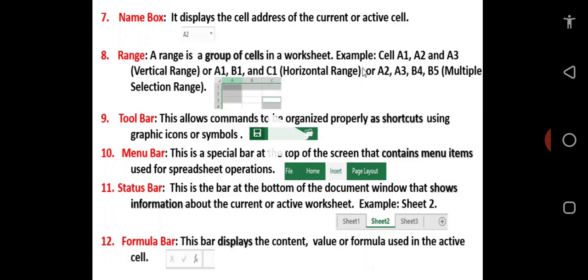Number 10, the menu bar. This is a special bar at the top of the screen that contains menu items used for spreadsheet operations. Just like what you have on a food menu that offers you meal options, the menu bar will give you options like file, home, insert, page layout, and others to make a choice that will enhance your spreadsheet operations.